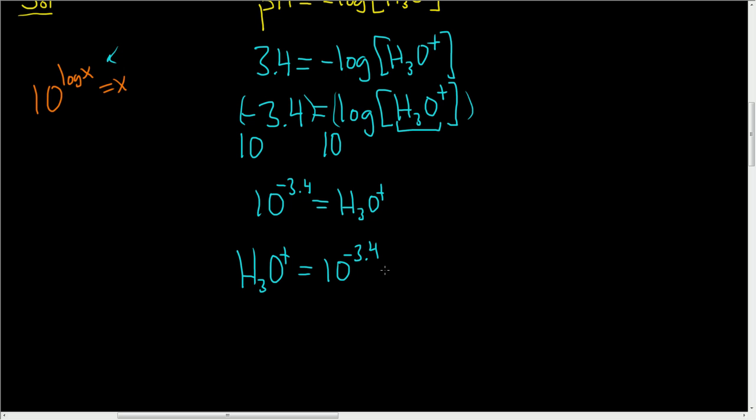Usually we write this in scientific notation. So if you put this in your calculator and you round to one decimal place, you actually end up with 4.0 times 10 to the negative 4. And so that is the final answer. I hope this video helps.